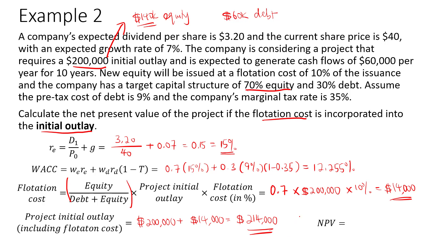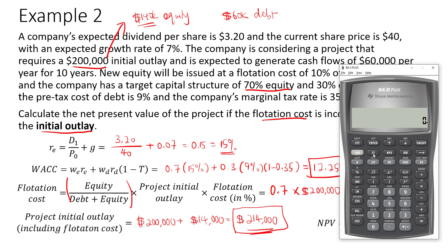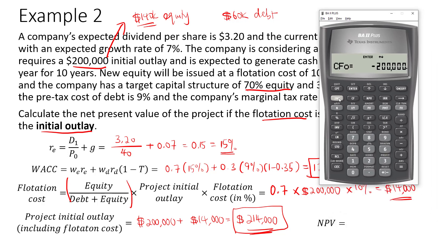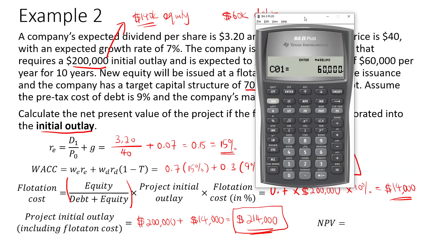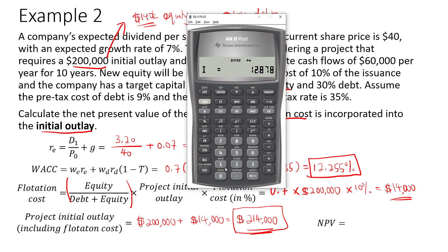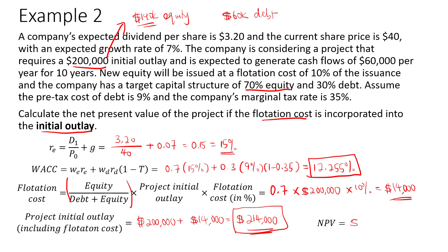Going back to the cash flow worksheet, revise the cash flow at time zero to negative $214,000 and press enter. The annual cash flow remains $60,000. Over at NPV, type 12.255, press enter, scroll down, and press compute. You get $121,503.76.